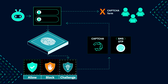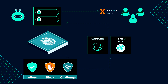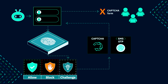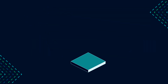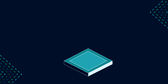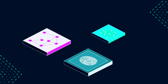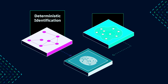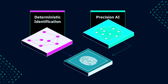By wrapping existing CAPTCHA providers and encrypting the return tokens with proprietary signals, it becomes impossible for CAPTCHA farms, AI tools, and automated bots to circumvent the challenge. Our latest features push the boundaries even further by combining supervised machine learning with device fingerprinting's deterministic, rules-based approach.